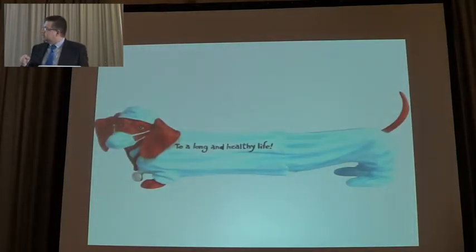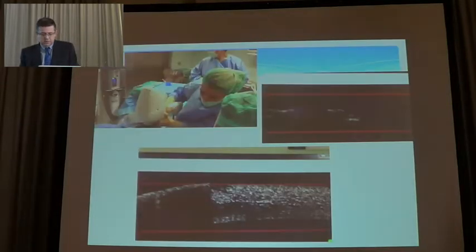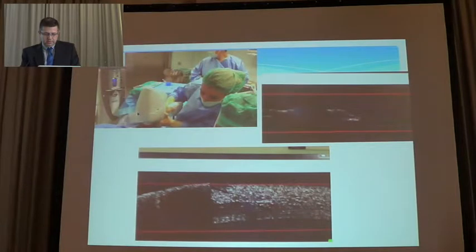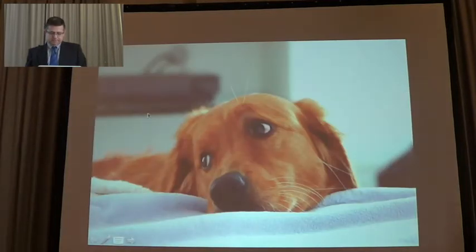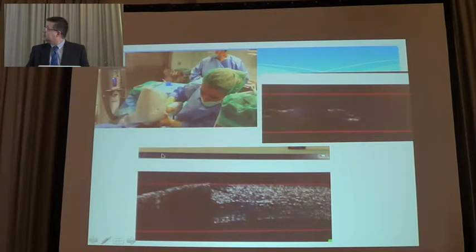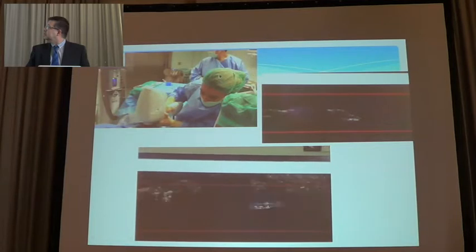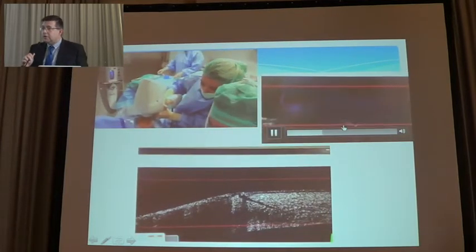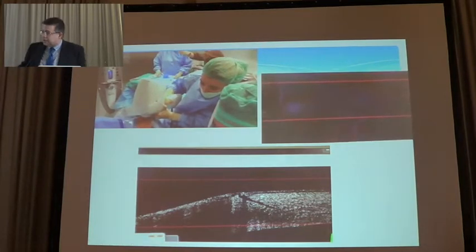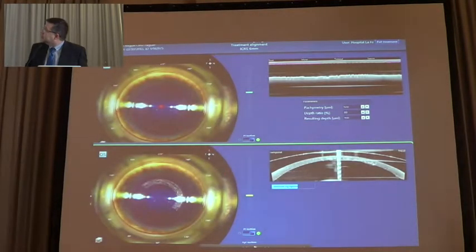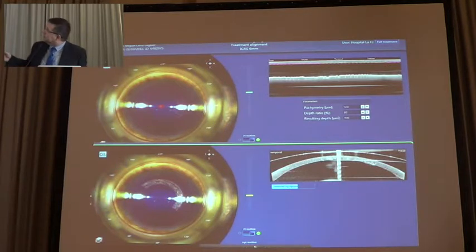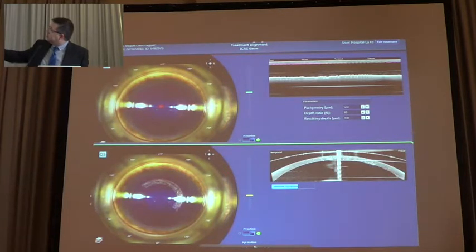Sometimes, getting the OCT to the surgical theater is not so easy. At the beginning, when you get your OCT, it's not straightforward — even if you only want to see how a wound incision looks in your cornea. But sometimes it becomes easier, as you can see here when we are doing the tunnel for an intracorneal ring: with the system we can see where we will place the tunnel and whether we are too deep or too shallow, and we can modify it.